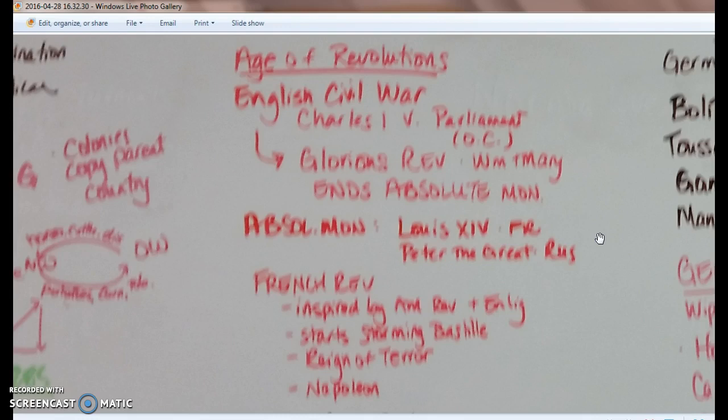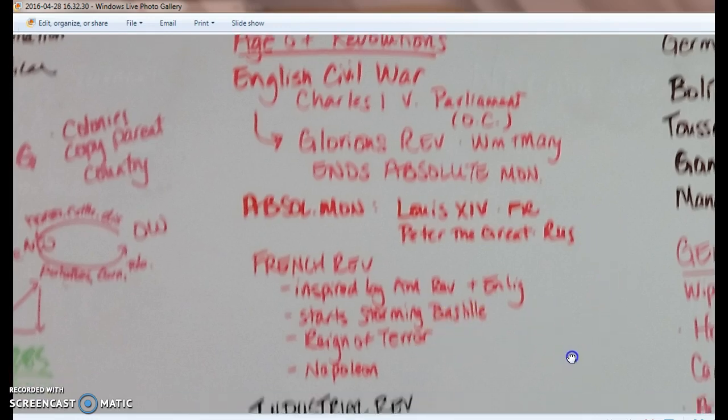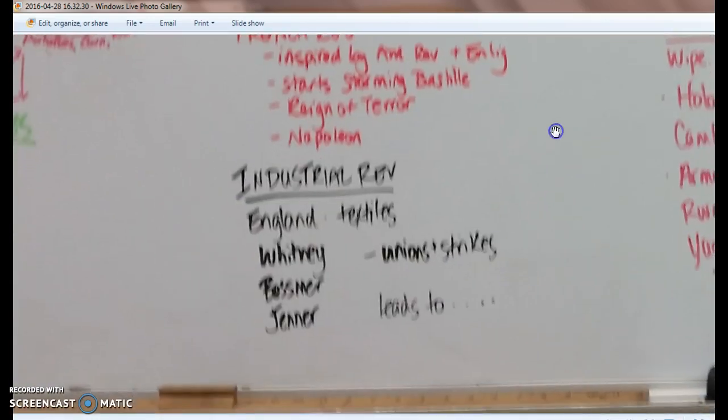We have the English Civil War: Charles I, who's abusing his power as an absolute monarch, versus Parliament, led by Oliver Cromwell. The ultimate result is the Glorious Revolution led by William and Mary — they end absolute monarchs, Charles loses his head, and Parliament is declared supreme, establishing a constitutional monarchy. The French Revolution is inspired by the American Revolution and the Enlightenment. It starts with the Storming of the Bastille and the Reign of Terror, and ends with Napoleon.